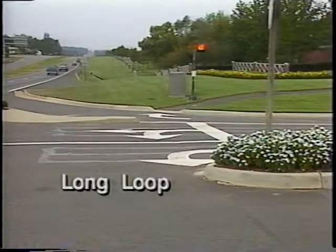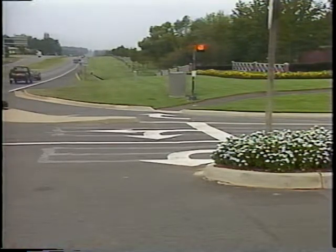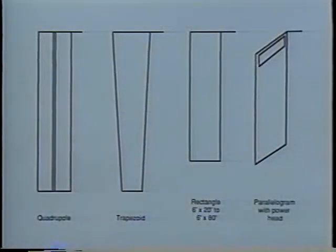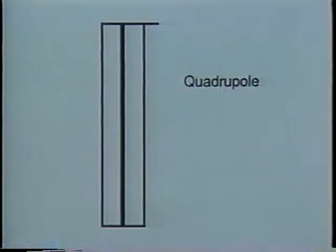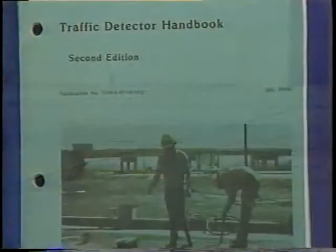Traditionally, the long loop has been defined as a six-foot-wide by twenty to more than eighty-foot-long single loop with one or two turns of wire. There are certain benefits and drawbacks associated with each of the long loop shapes. For example, the quadrupole design eliminates the splashover problems of the other shapes but has difficulty detecting high-bed vehicles. The lengths of all of these long loop shapes increase the chance of detector failure caused by pavement cracks and joint movements. Refer to your handbook for more information concerning long loop comparisons.